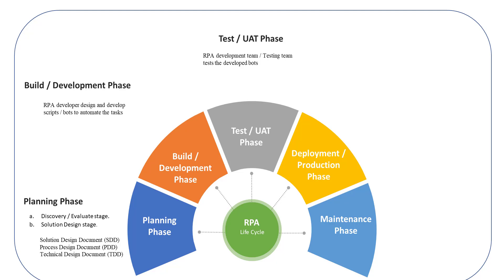Companies with testing team members who excel in QA testing are the ones that get access to bots with automation. If the testing phase passes successfully, the bots are transferred to the next stage. If testing fails, they are transferred back to the Development phase, where RPA developers examine the errors found and resolve them. Once the bots are successfully tested, they are transferred to the Deployment phase. The testing stage involves the verification of the solution's functionality and performance.